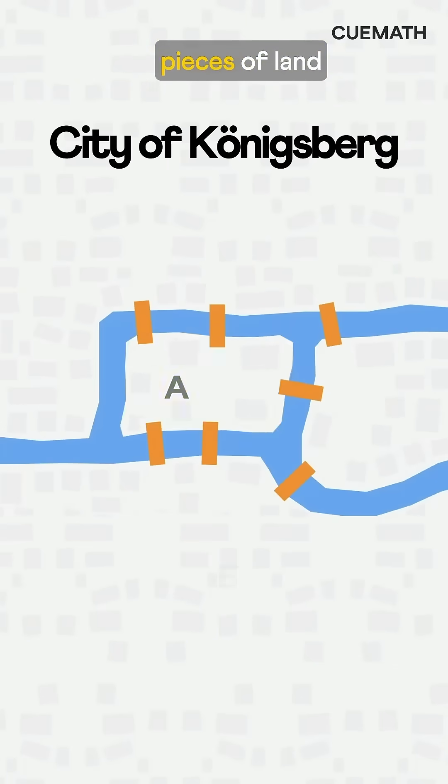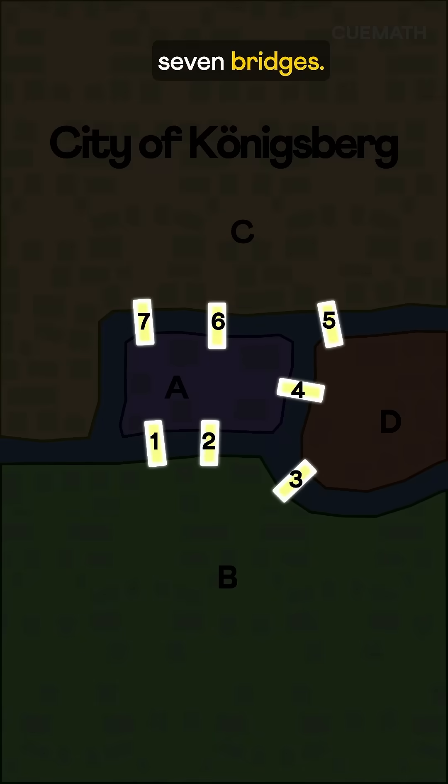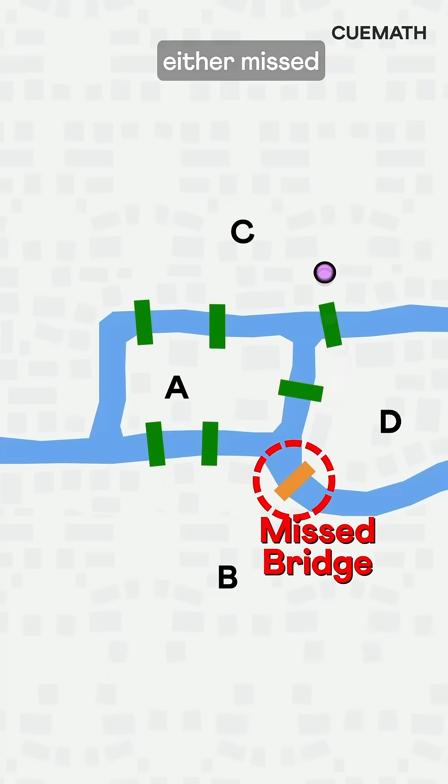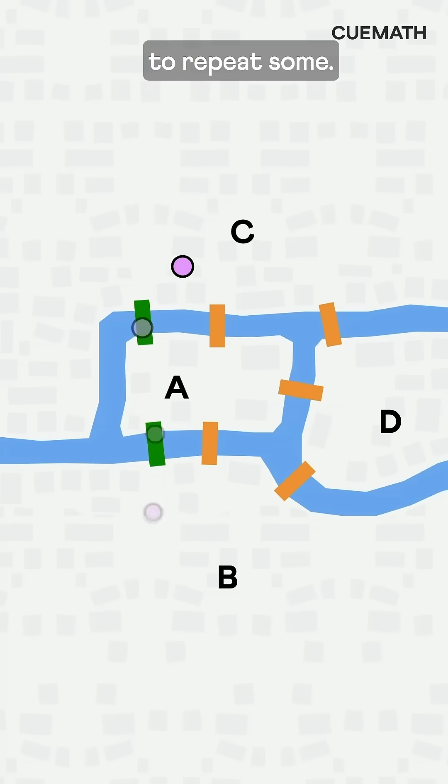In the city of Königsberg, four pieces of land were connected by seven bridges. Locals tried crossing all the bridges exactly once, but they either missed some bridges or had to repeat some.